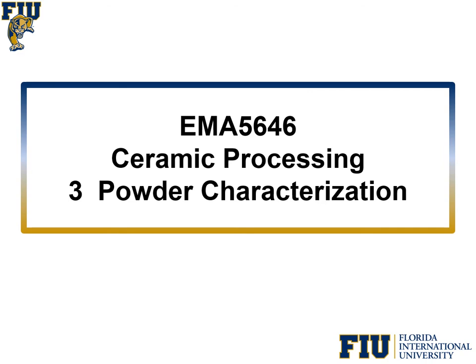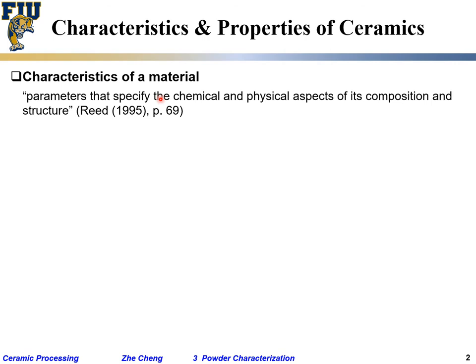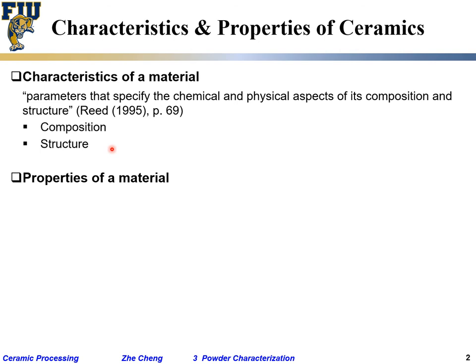Let's talk about the characteristics and properties of ceramics — these two words are related but slightly different. Characteristics of a material means the parameters that specify the chemical or physical aspects of its composition and structure. It encompasses two parts: chemical composition and physical structure.